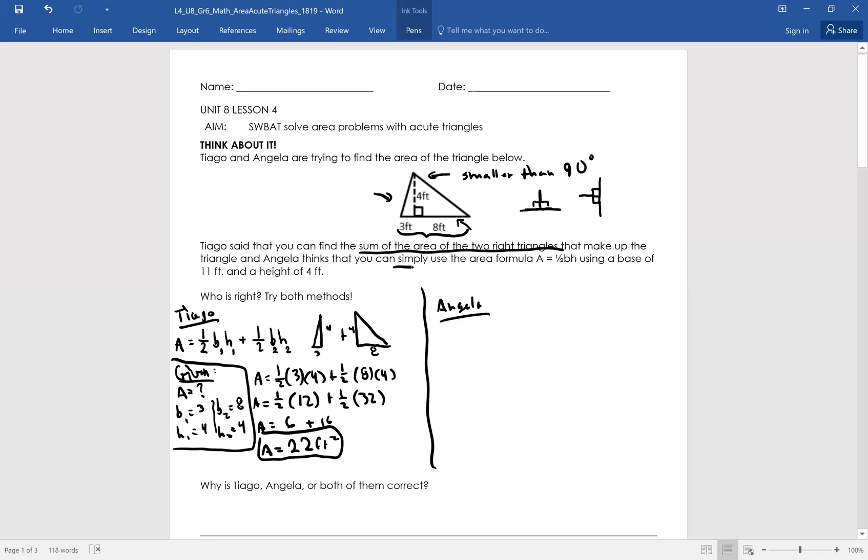Angela says you can simply use the formula using a base of 11 and a height of four. Let's see what she's talking about. So she's using the normal formula that we came up with yesterday. Now, what are we given? We don't know the area. She's saying that the base will be 11 and the height will be four. Okay. Now, how did she get 11? She simply added the two bases, three and eight. So that creates one long base, which is 11. So let's go ahead and start our substitution. One half times 11 times four. One half times 44. And half of 44 is 22.